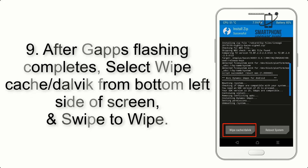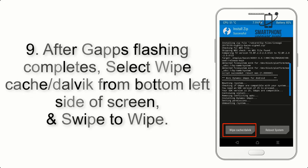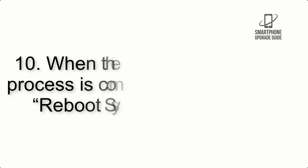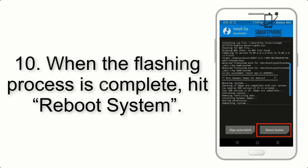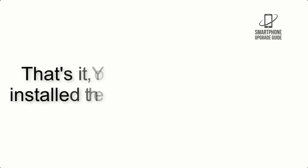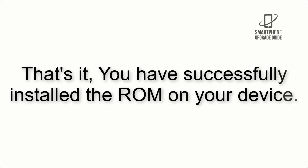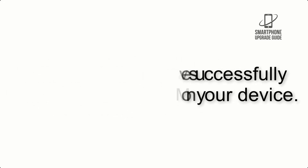Step 9: After GApps flashing completes, select Wipe Cache and Dalvik from the bottom left side of the screen and swipe to wipe. Step 10: When the flashing process is complete, hit Reboot System. That's it — you have successfully installed the ROM on your device.